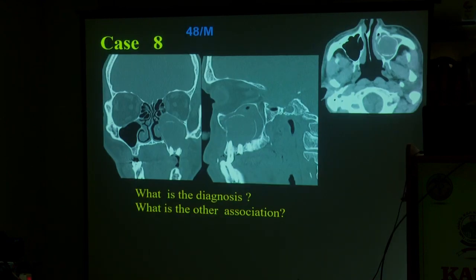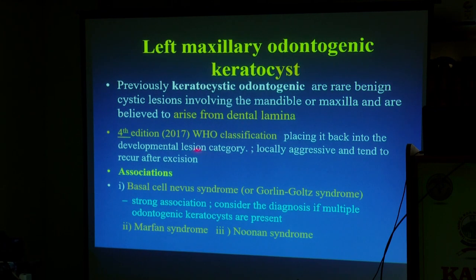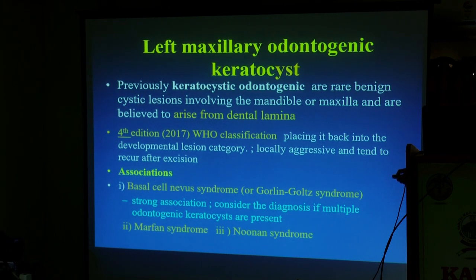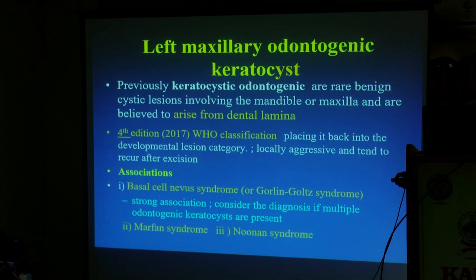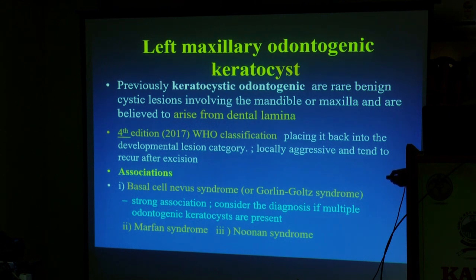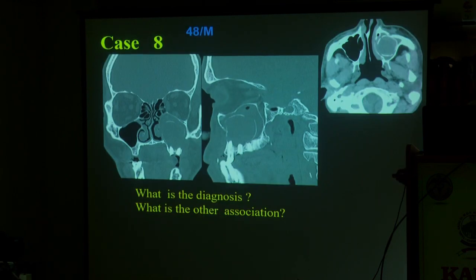Case number eight: what is the diagnosis? It is a typical odontogenic keratocyst. What is the association? It can be isolated or associated — according to the WHO classification, it is arrested from the dental lamina, locally aggressive, and a developmental lesion. The associations include Basal Cell Nevus syndrome, Gorlin-Goltz syndrome, Morquio syndrome, or Noonan syndrome. They will expect Basal Cell Nevus syndrome — this is the most strong association.